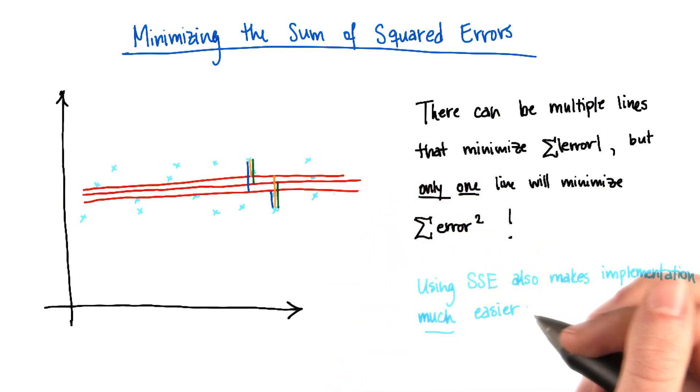There's one more thing that I should add as well. This is a little bit more of a practical concern. And that is using the sum of the squared error as a way of finding the regression also makes the implementation underneath the hood of the regression much easier.